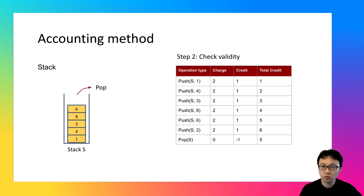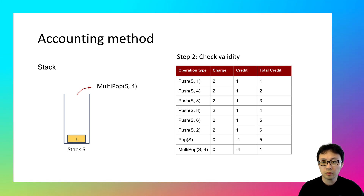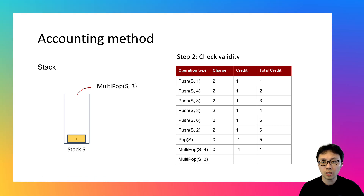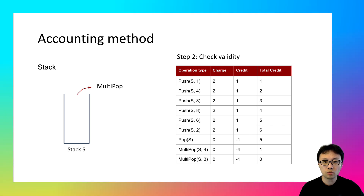Next, we run a multipop operation removing four elements from the stack. We charged nothing, but its actual cost is four, so there is a deficit of four — the total credit goes from five to one. Then we run another multipop aiming to remove three elements, but there is only one element left in the stack, so it removes only one element, with an actual cost of one. Since we charged nothing, the deficit of one is paid from the bank account. After these three pop operations, all credits have been used and the stack is empty.